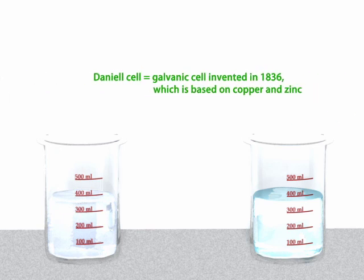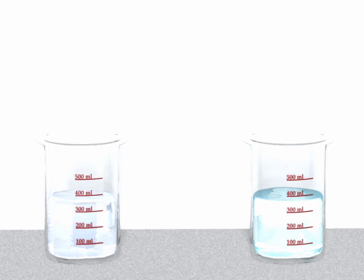This combination is called a Daniel cell. The solutions contain positively and negatively charged atoms which are called ions.